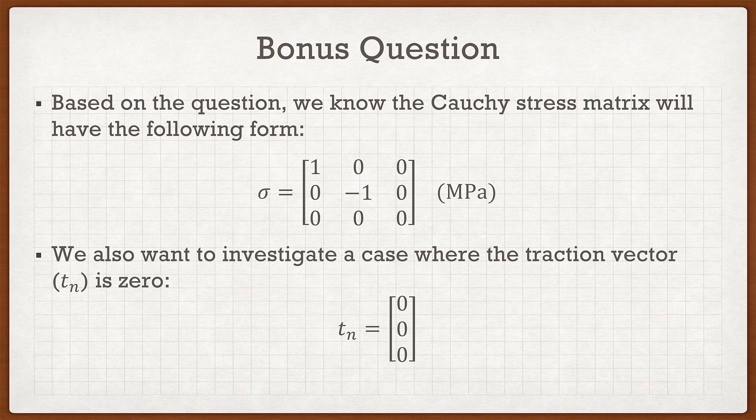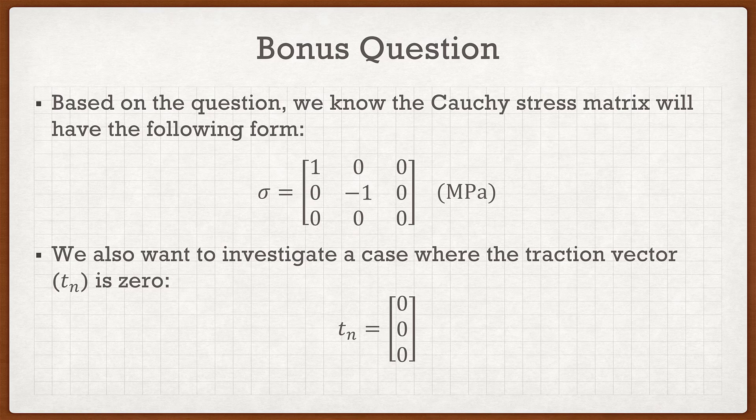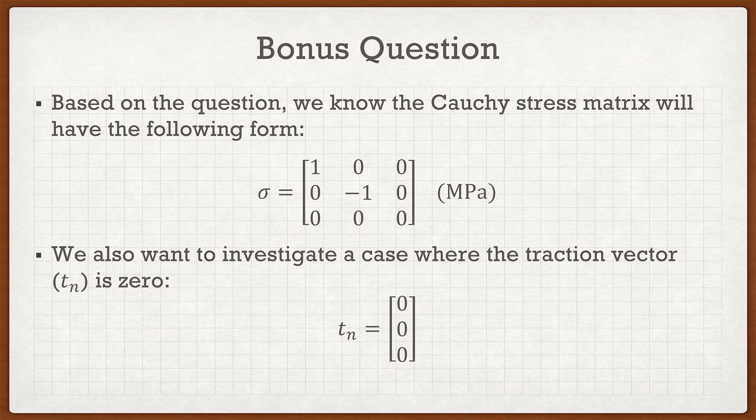We also are asked to investigate the case where the traction vector tₙ is zero. So therefore tₙ is a vector [0, 0, 0]. What it's asking us to do is find the normal vector. It actually already tells us what the normal vector is - it should be [0, 0, 1] - but it wants us to prove it.